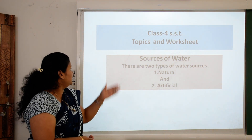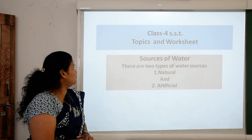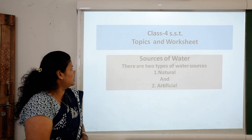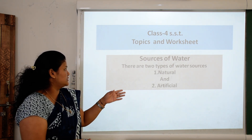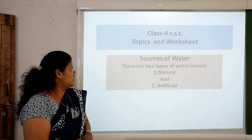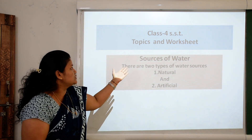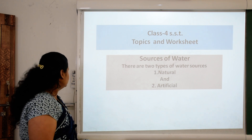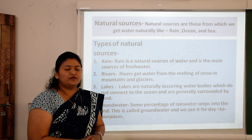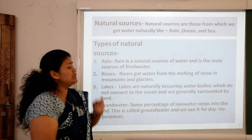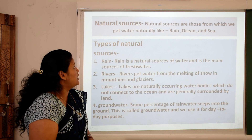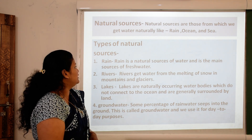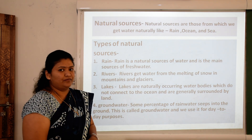Our first topic and worksheet: Sources of Water. There are two types of water sources — natural and artificial sources. Here we will see sources of water. First, we will see natural sources. Natural sources are those from which we get water naturally, like rain, ocean and sea.